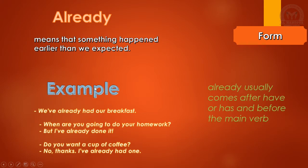Already - we use already to talk about action that happened and finished earlier than we expected. Like this example: We've already had our breakfast. It means we finished our breakfast before we realized it. When are you going to do your homework? But I've already done it. See, this example shows that he wasn't expecting him to finish the homework, but he already did it.